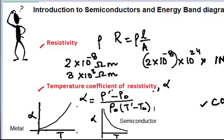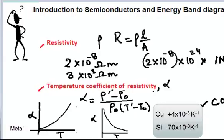Looking at specific values: for copper, the temperature coefficient of resistivity is about 4×10⁻³ per Kelvin. And for silicon, we have a negative value of −70×10⁻³ per Kelvin.